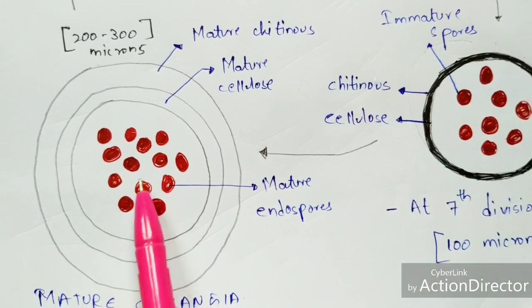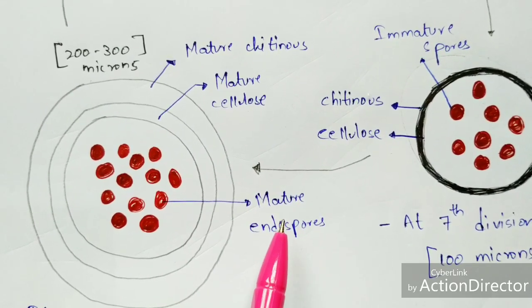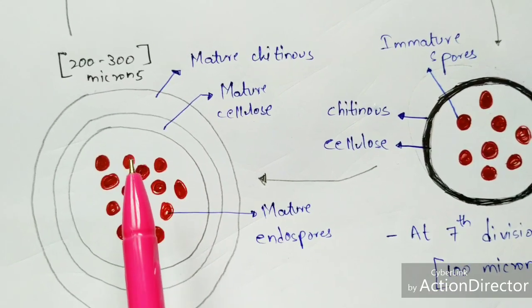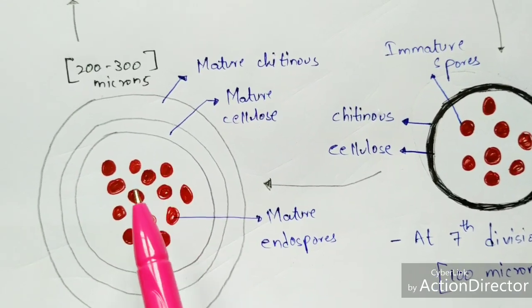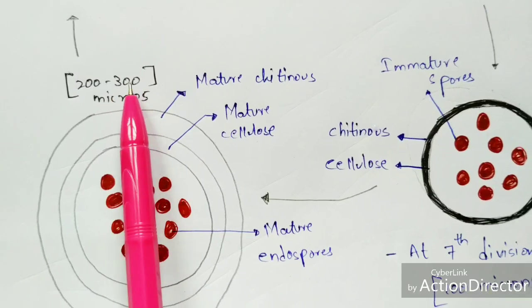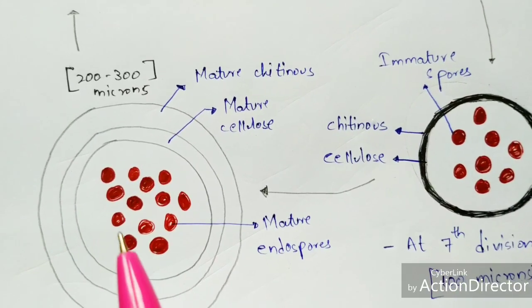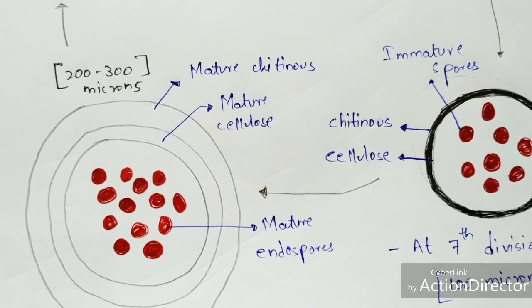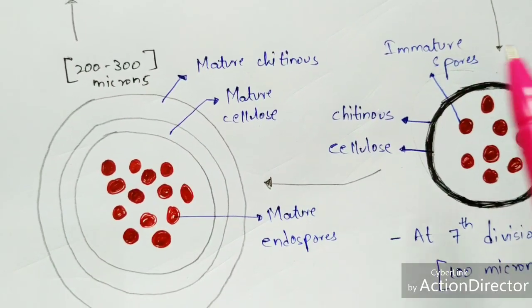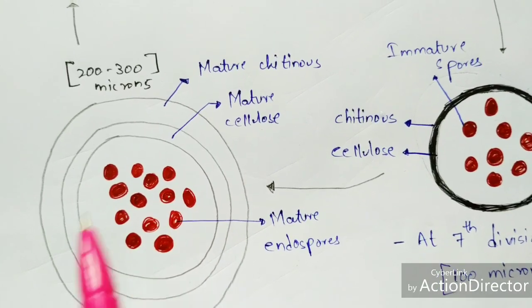As the number of mature endospores increases, it enters the mature sporangia stage. The pressure increases, causing the size of the mature sporangia to increase as well, ranging up to 200 to 300 microns — an estimate, since there is no fixed measurement. The cytoplasm region of the mature sporangia contains the mature endospores.